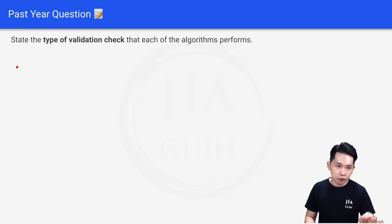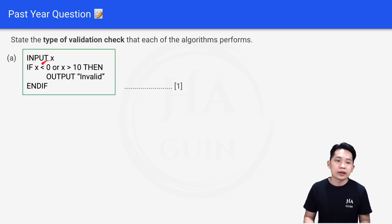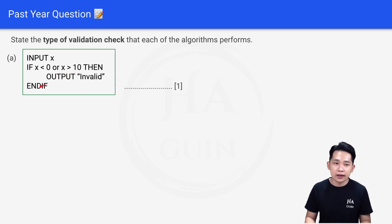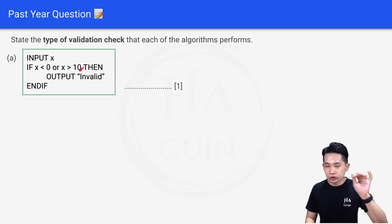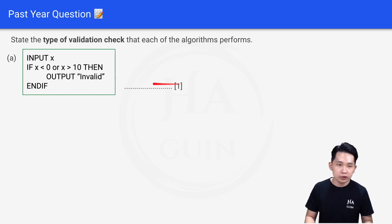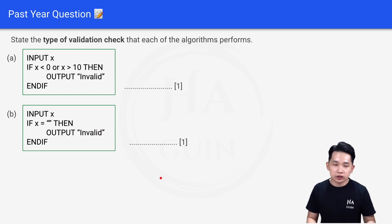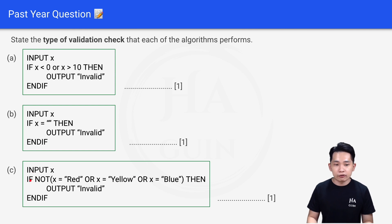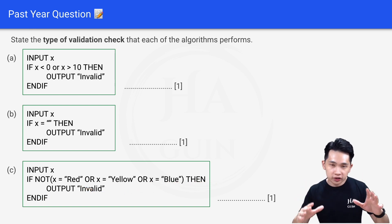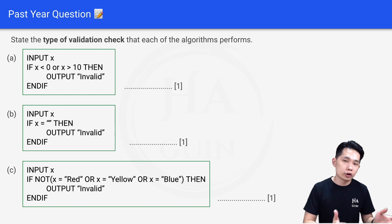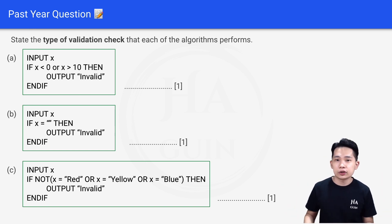Before we end, let's look at a practice question: state the type of validation check each algorithm performs. First — input X; if X is less than 0 or X is more than 10, then output invalid. Second — input X; if X is equal to empty, then output invalid. Third — input X; if X is not equal to red, yellow, or blue, then output invalid. Refer back to the video and comment your answers below. Thank you, see you next time!